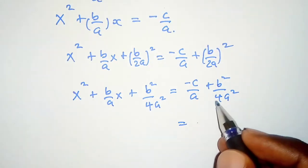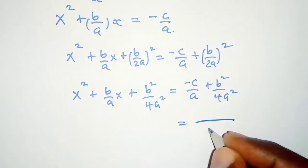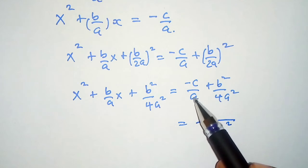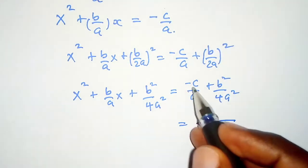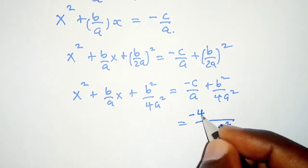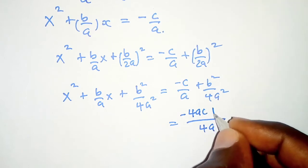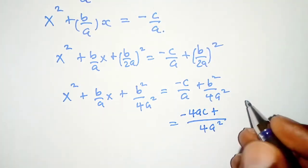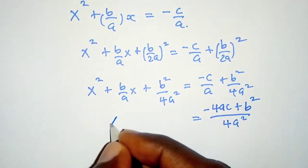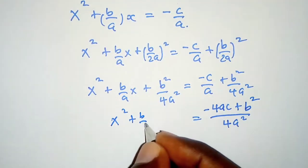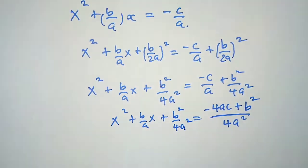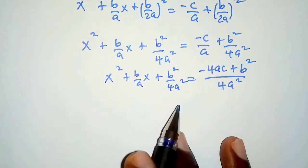On the right hand side we can make 4a squared the LCM. So the LCM is 4a squared, and therefore 4a times negative c gives negative 4ac, and then 4a squared goes once, giving b squared. The left hand side remains x squared plus b over a times x plus b squared over 4a squared.